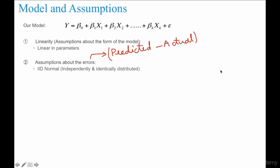The first assumption of errors is that errors should be independently and identically distributed. That is, errors should be normally distributed. Errors should be independent of each other. And identically distributed means errors should have constant variance and errors should have zero mean.